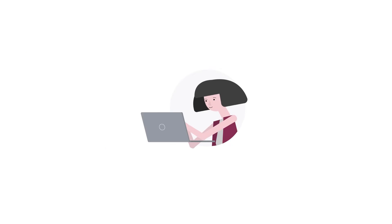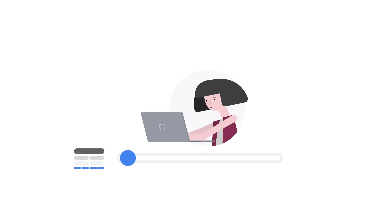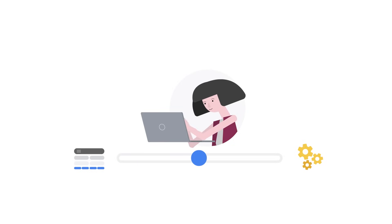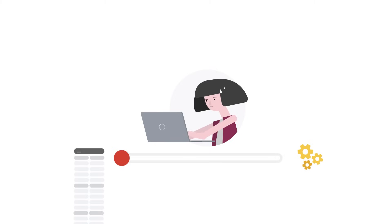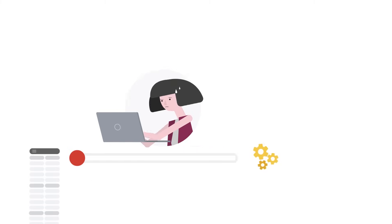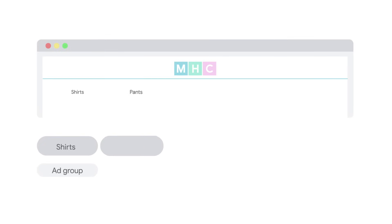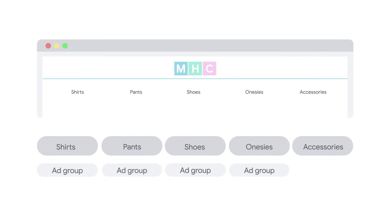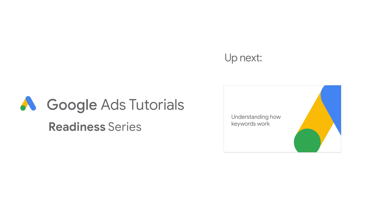There are many effective ways to organize an account. Find the balance between an account structure that enables relevance between search terms, ads, and landing pages while simultaneously being easy to manage. For example, managing hundreds of campaigns in one account can make management difficult and also isn't necessary, especially when using smart bidding. Creating tightly themed ad groups and campaigns that mirror your website will help you achieve a simpler campaign structure while keeping ads relevant. Now that you know about account organization, it's time to set up keywords in your account.